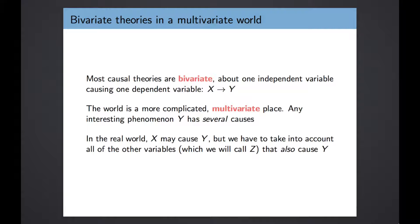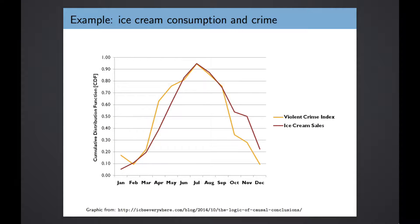Well, we have to take into account all of the other variables, which we're going to generically call z — how all those other variables also affect the outcome that we're interested in — and make sure that we take all of that complexity into account as we try to assess whether our theory is true. If we only look at the relationship between the two variables that we're most interested in, we are likely to make bad inferences.